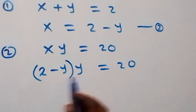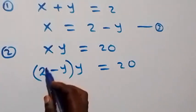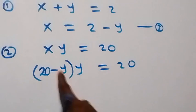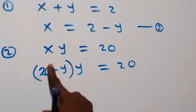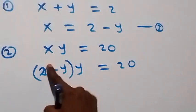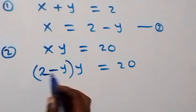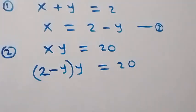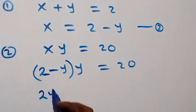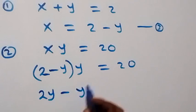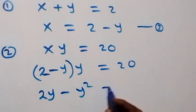Let's open this bracket. We have (2 minus y) times y equals to 20. Opening the bracket, we have 2y minus y squared equals to 20.